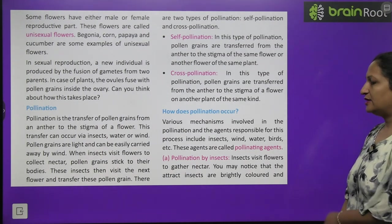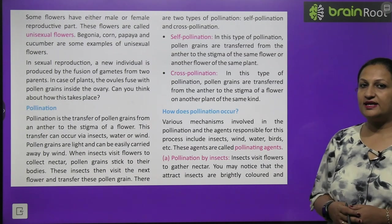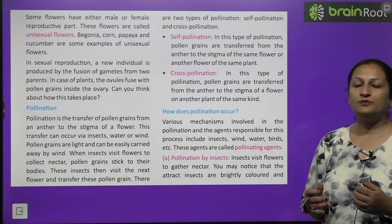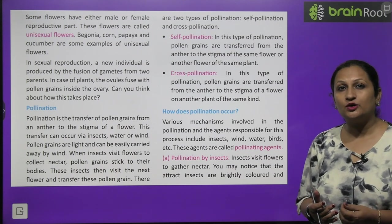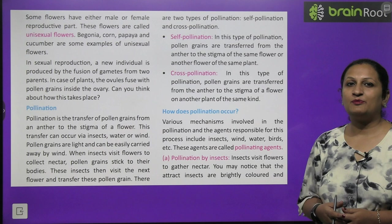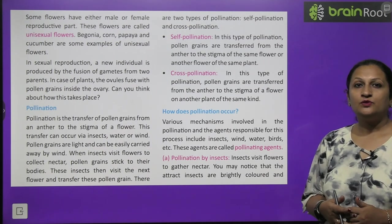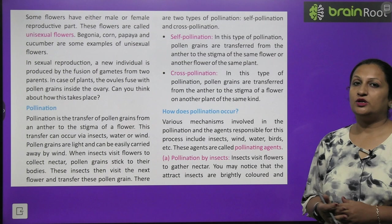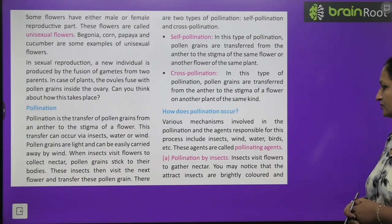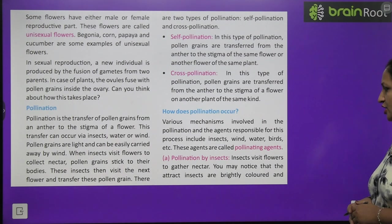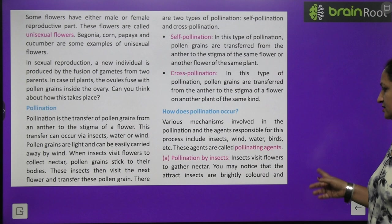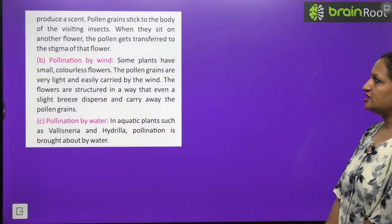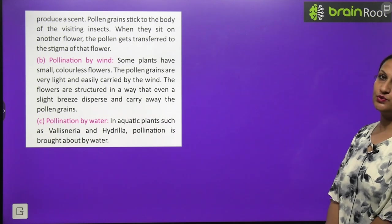How does pollination occur? Now pollination is by different methods such as insects. Insects are attracted by the sweet smell and bright color of the petals. So when insects come to a flower to visit, pollen grains are very light weight, powder type. They stick to the insects. Now insects go to the next flower to collect nectar. What happens here? The pollen grains transfer to the other flower. This way pollination can take place with the help of insects. Insects visit flowers to gather nectar. You may notice that flowers that attract insects are brightly colored and produce a scent. Pollen grains stick to the body of visiting insects. When they sit on another flower, the pollen grains get transferred to the stigma of the flower.